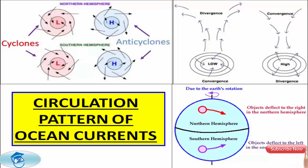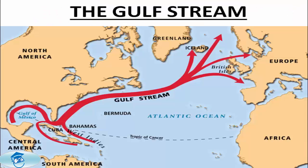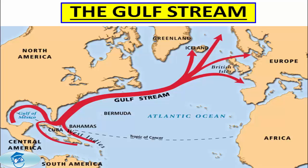Let's discuss some major oceanic currents. The first is the Gulf Stream. The Gulf Stream, together with its northern extension towards Europe — the North Atlantic Drift — is a powerful, warm, and swift Atlantic Ocean current that originates in the Gulf of Mexico, exits through the Strait of Florida, and follows the eastern coastlines of the United States and Newfoundland before crossing the Atlantic Ocean. At about 30°W, 40°N, it splits into two, with the Northern Stream crossing to Northern Europe and the Southern Stream recirculating off West Africa.